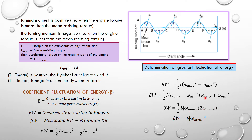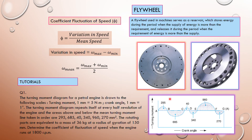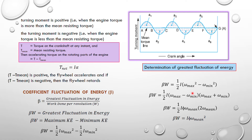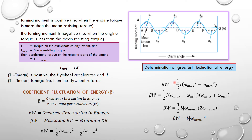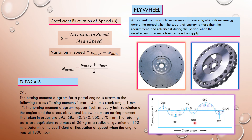The maximum minus minimum speed gives the variation in speed; the maximum plus minimum speed divided by 2 gives the mean speed. So phi is variation in speed over mean speed. You need to manipulate the equations to derive this formula. Remember these formulas: beta × W = I × omega_mean² × phi, the definition of phi, and the variation in speed.